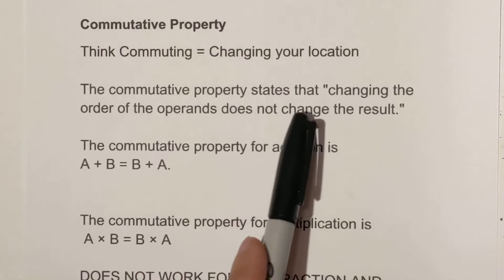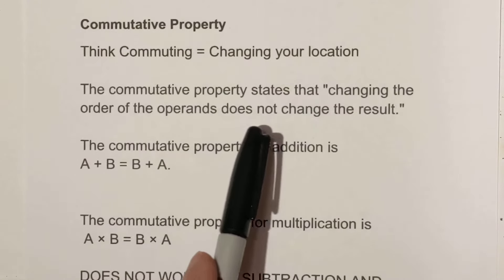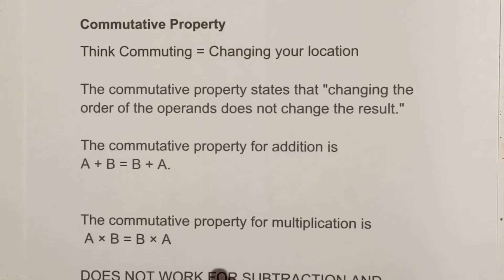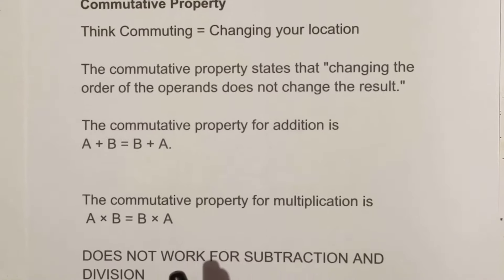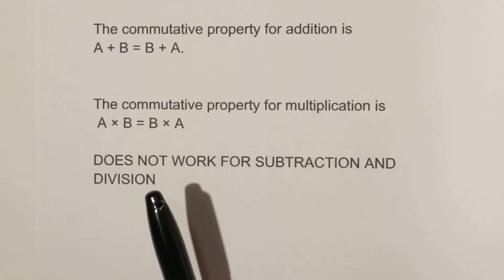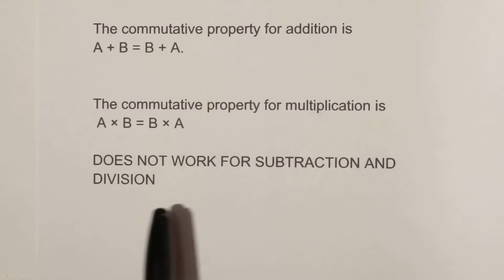The commutative property states that changing the order of the operands does not change the result. The commutative property for addition is a plus b equals b plus a, and for multiplication it's a times b equals b times a. Please note it does not work for subtraction and division.